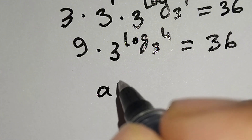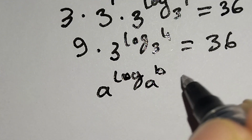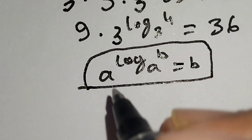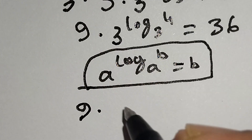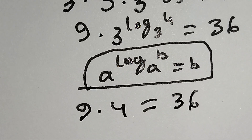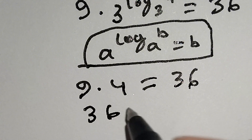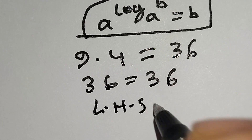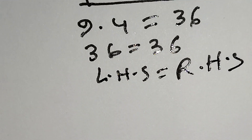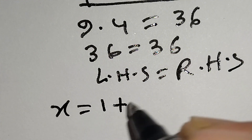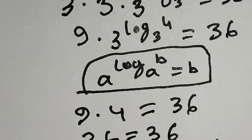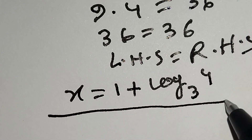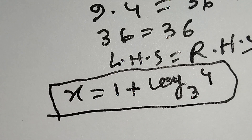We know that a to the power log base a of b is equal to b. According to this formula, 9 times 4 is equal to 36, and indeed 9 times 4 equals 36. So left-hand side equals right-hand side. Therefore x is equal to 1 plus log base 3 of 4 is the correct answer. Thanks for watching the video, please like, comment, share and subscribe.